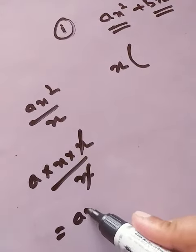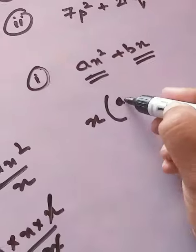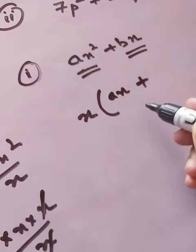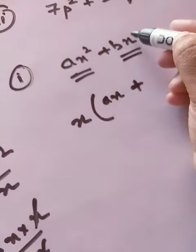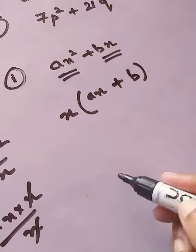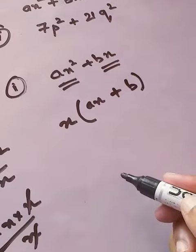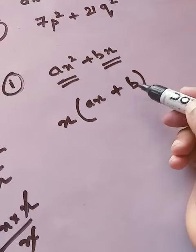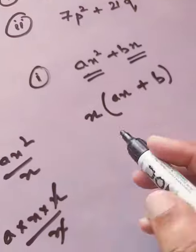What is the answer? ax. So inside the bracket there would be ax. Now if I divide bx with x, this x and x will be cancelled. What will remain? b. So inside the bracket there would be only plus b. So this is a solution of sum number 1. Very easy students.